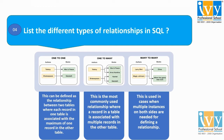Moving to the last one: many-to-many. This type of relationship is used when multiple instances on both sides are needed for defining a relationship. In the example, we consider again two tables, author and books, and they have a many-to-many relationship between them.